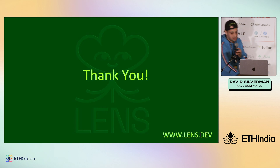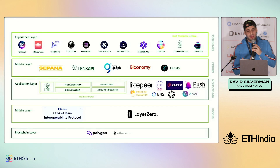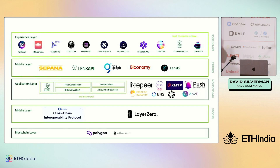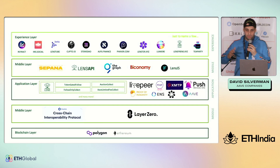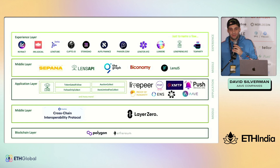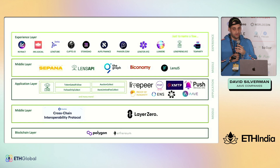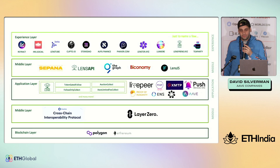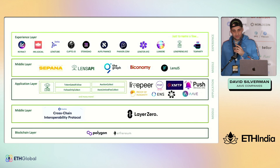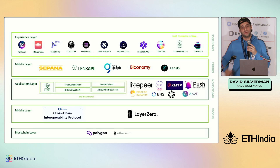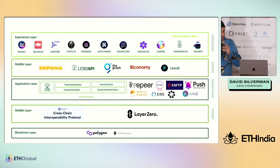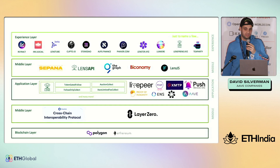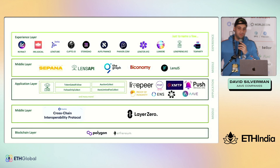So the Lens contracts themselves are built on Polygon, and there are ways in which you can extend them. We call them modules — collect module, follow module, and reference module. These are ways for developers to hook in their own contracts into the Lens system. Lens does not itself specify any bridges for receiving or sending cross-chain data — you can plug in any bridge you want. This follows the same design pattern we used in Aave V3. We know there are active teams building integrations with Layer 0, Chainlink CCIP, as well as dBridge and Stargate. Lens is agnostic to the bridging solution used; you as the application developer can pick which one you trust.